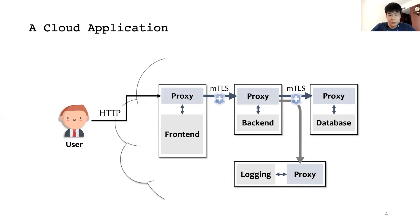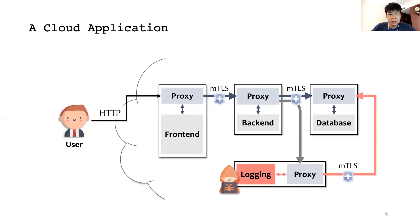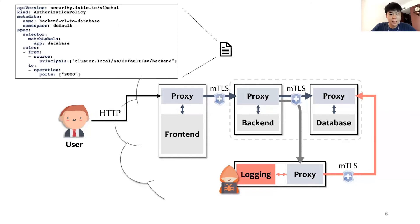However, the communications that were previously conducted by local invocations are now exposed through the network, which creates a potential attack surface. For example, if the logging service is compromised, hiding behind its IP address and certificate, the attacker may directly talk to the database service to obtain sensitive information. To defend against this kind of attack, popular microservice infrastructures such as Kubernetes and Istio provide inter-service access control mechanisms. With authorization policies, the administrator can specify that only the backend service can access the database service. Thus, this attack can be prevented.